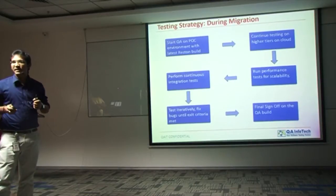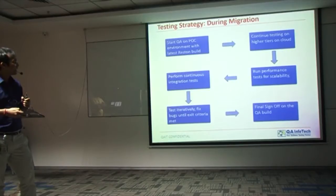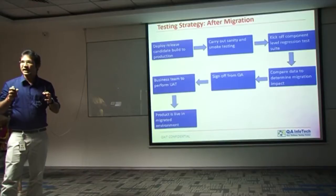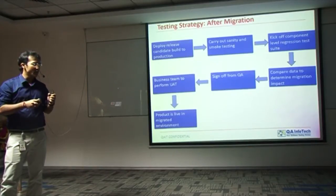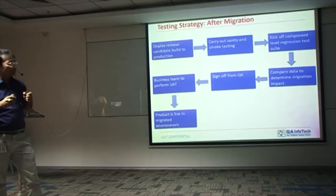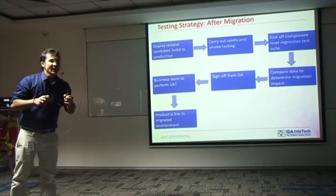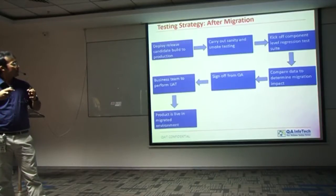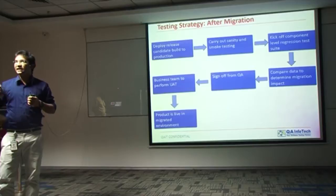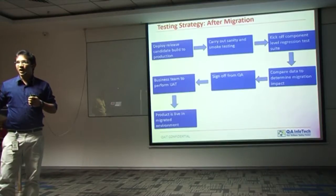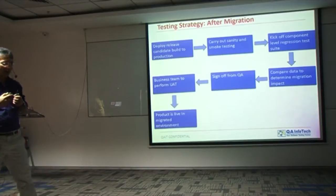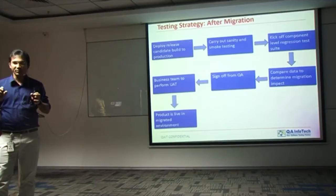Once the exit criteria is met, QA provides the final sign-off on the build. On the day of the migration, we deploy the release candidate build — the result of the final QA sign-off — to production. QA then carries out functional and performance tests on the production environment and component-level regression testing. The test data collected before migration is compared with the data after migration to ensure there was no data loss in the process.